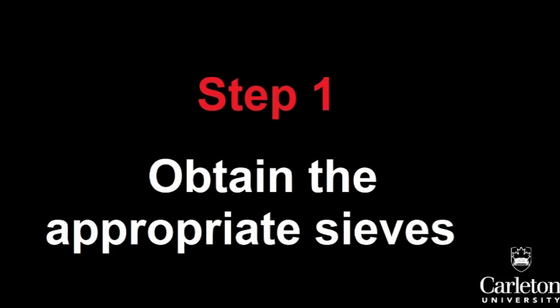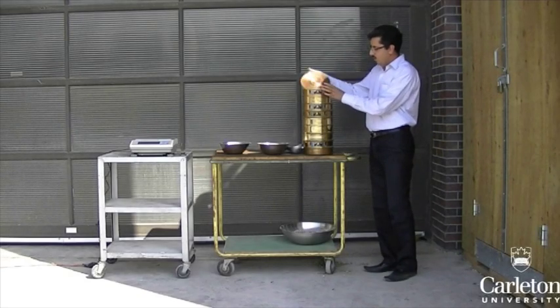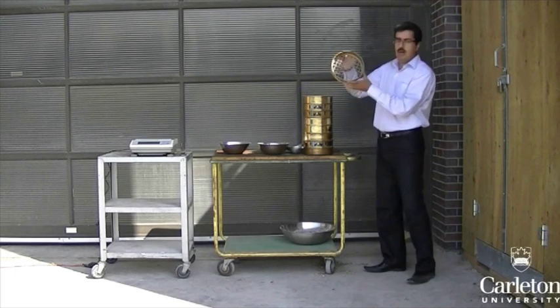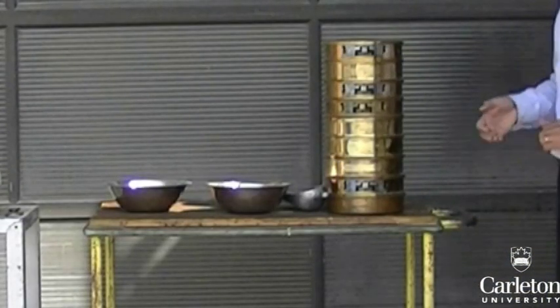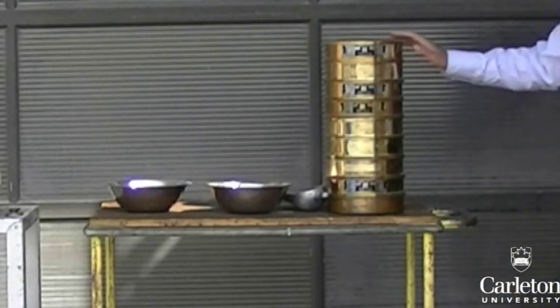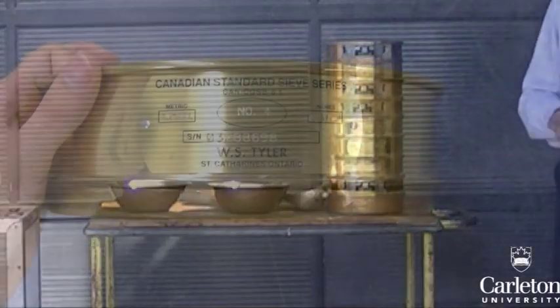In this lab, we will be filtering the soil sample through a series of progressively smaller sieves. Sieves are simply metal meshes of a particular size framed by a round rim. These are the sieves that we will be using. The sieve at the top has the largest hole size, while the sieve at the bottom has the smallest.